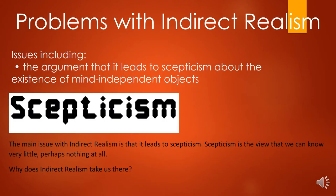Problems with indirect realism can really be summed up in one thing: the argument from indirect realism leads to scepticism about the existence of mind-independent objects and the external world at all. Scepticism is asking what we can know — can we know anything? Perhaps we know nothing about a world beyond our minds.